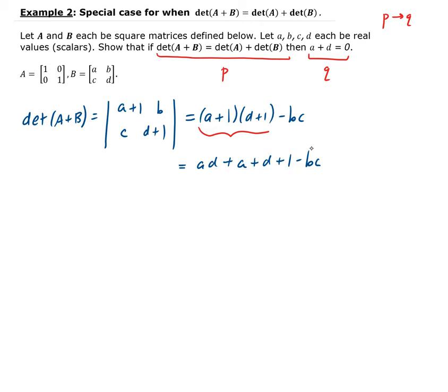Now let's calculate the determinant of A. The determinant of A is just going to be 1, because it's the identity matrix — all determinants of identity matrices are always 1. The determinant of B, applying the formula for a 2 by 2 matrix, is going to be A times D minus B times C. So we now have the determinant of A plus B, the determinant of A, and the determinant of B.